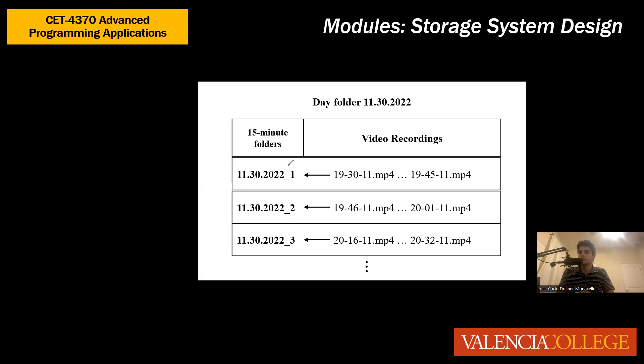This folder arrangement is done because of the permanent recording system — since we're saving 15 minutes, 30 minutes, and an hour. Arranging files this way makes it easier to retrieve the right folders. These folders are also arranged with a pointer system, which allows the device to turn on and off. So when the device is turned on, it stores the 15-minute folder number — for example, folder 1.